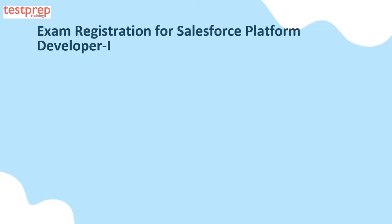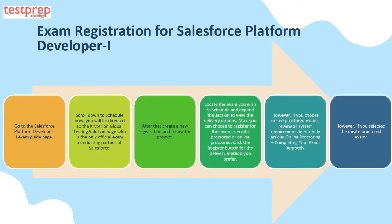For exam registration for Salesforce Platform Developer 1, follow the steps mentioned below. First, go to the Salesforce Platform Developer 1 Exam Guide page. Second, scroll down to Schedule Now — you will be directed to the Criterion Global Testing Solution page, who is the only official exam conducting partner of Salesforce. Third, create a new registration and follow the prompts. Fourth, locate the exam you wish to schedule and expand the section to view the delivery options.